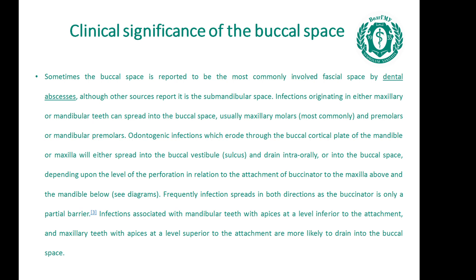Other sources report it is the submandibular space. Infections originating in either maxillary or mandibular teeth — usually maxillary molars most commonly, and premolars or mandibular premolars — can spread into the buccal space. Odontogenic infections that erode through the buccal cortical plate will either spread into the buccal vestibule sulcus and drain intraorally, or into the buccal space, depending on the level of perforation relative to the buccinator attachment. Infections associated with mandibular teeth with apices inferior to the attachment, and maxillary teeth with apices superior to the attachment, are more likely to drain into the buccal space.